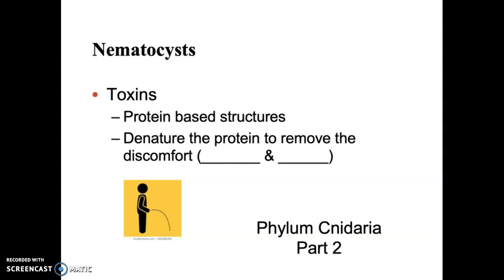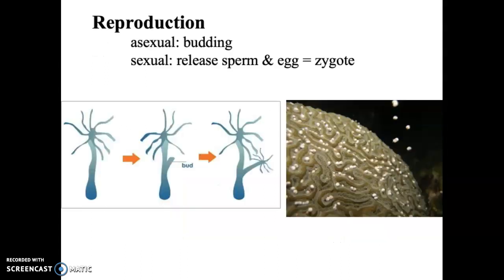The last thing to mention, before we jump into the actual different Cnidarians, is the reproduction of Cnidarians. Reproduction is going to be achieved in two different fashions: asexual and sexual. Asexual tends to occur during good environments — let's just clone ourselves. They will do it through a process called budding, or sexual reproduction.